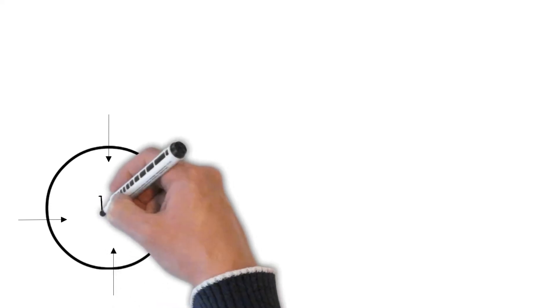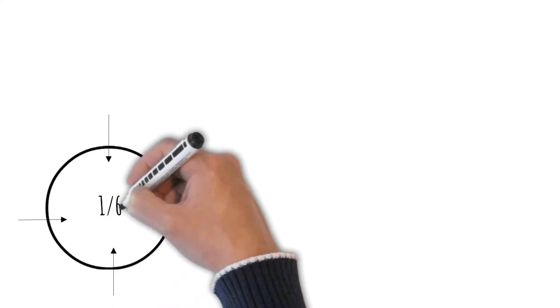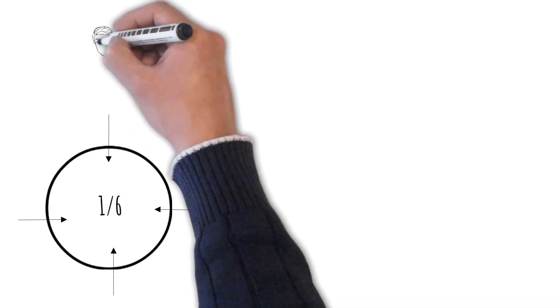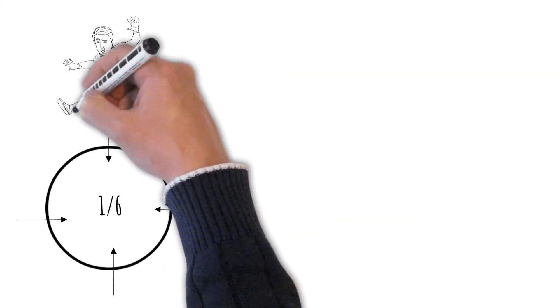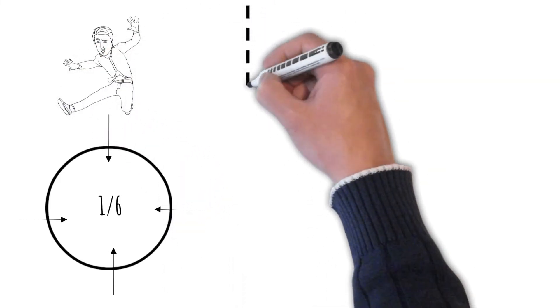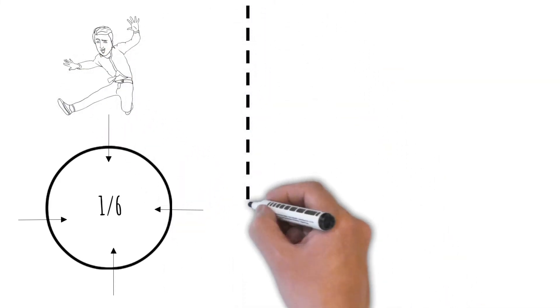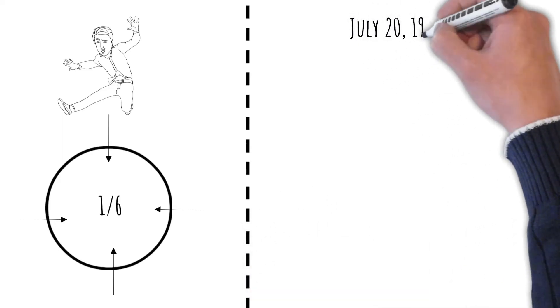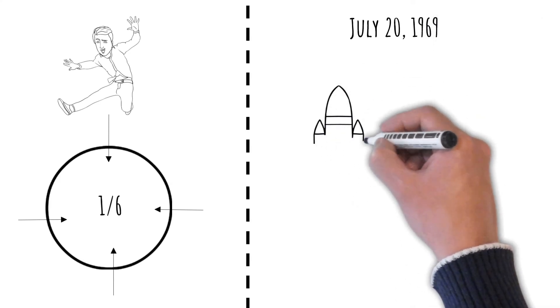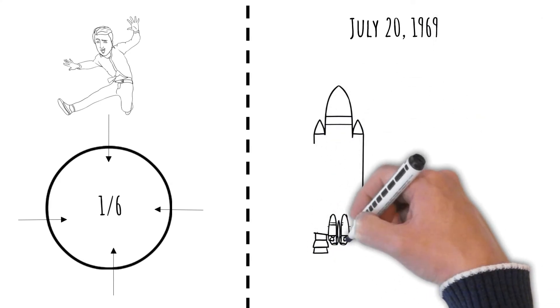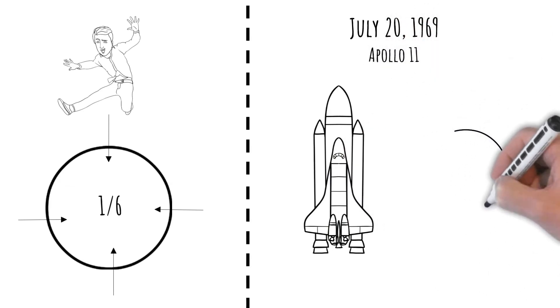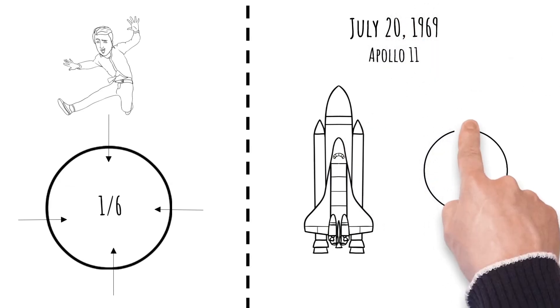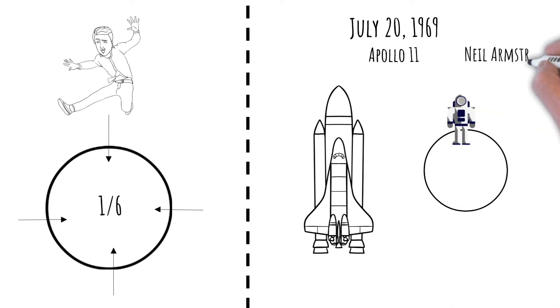So it is actually one sixth of Earth's gravity. So when you jump on the moon, it will take you longer to come back down to it. On July 20th, 1969, the first humans set foot on the moon with the Apollo 11 mission, making Neil Armstrong the first human to set foot on the moon.